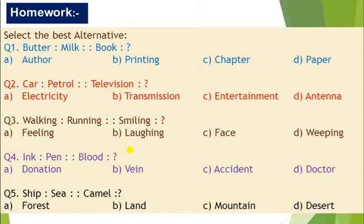Select the best alternative. Question number one: Butter, Milk, Book. From milk we get butter. So from what do we get book? Author, printing, chapter, or paper? You have to find this. Question number two: Car, Petrol, Television.